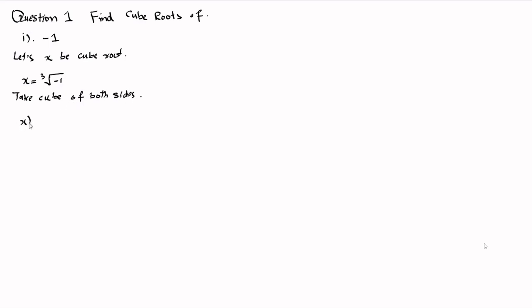So we have x cubed equal to the cube root of minus 1, whole cubed. This cube cancels out with the cube root, and we have x cubed is equal to minus 1.